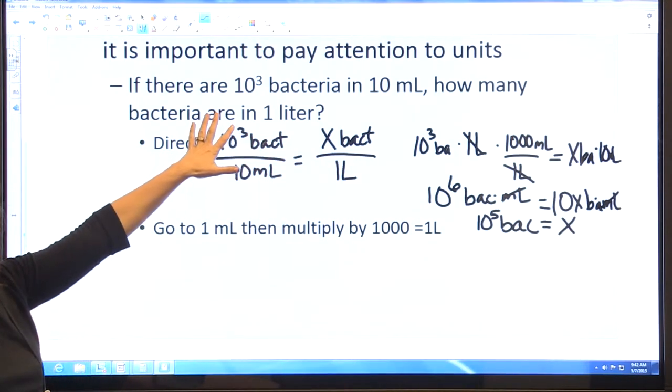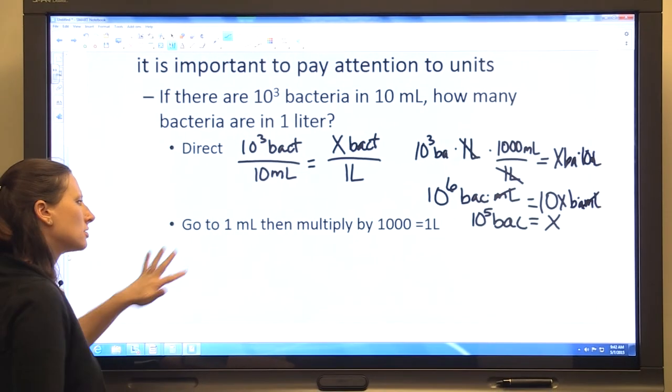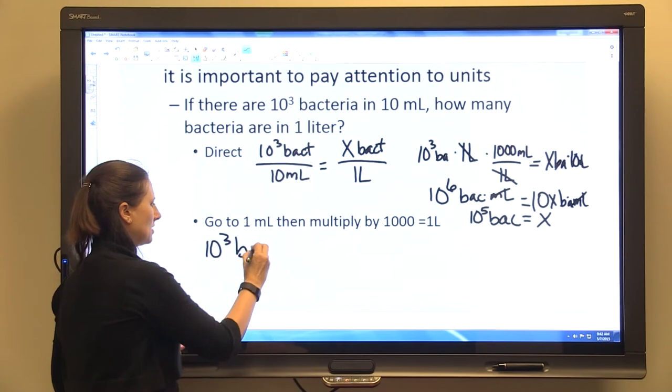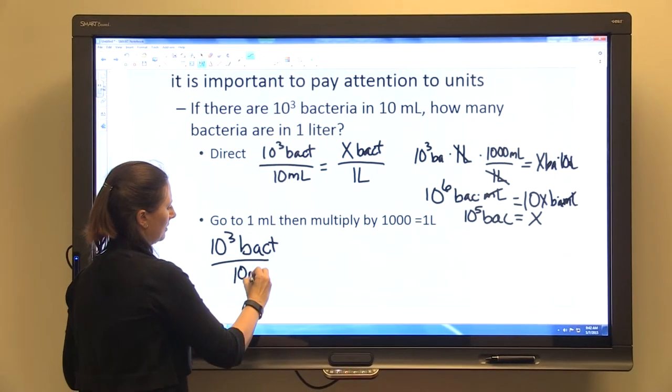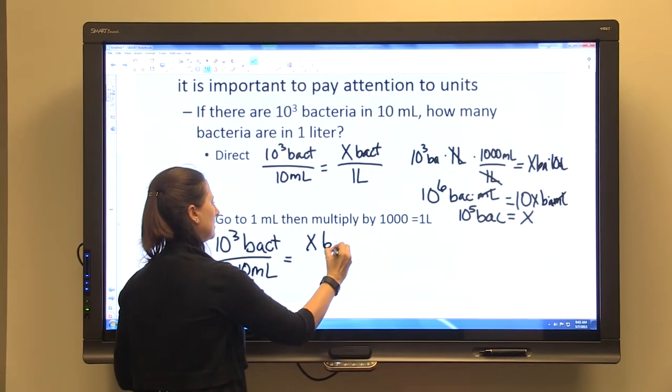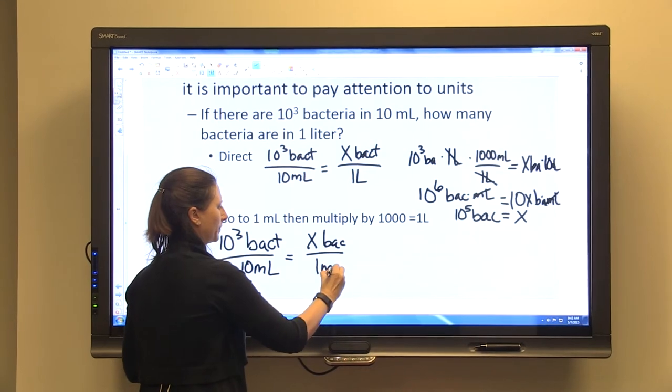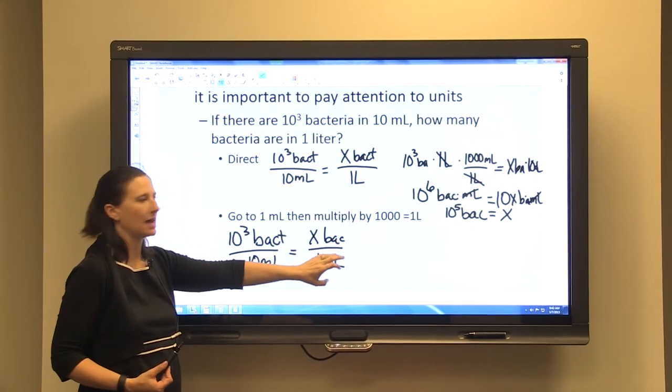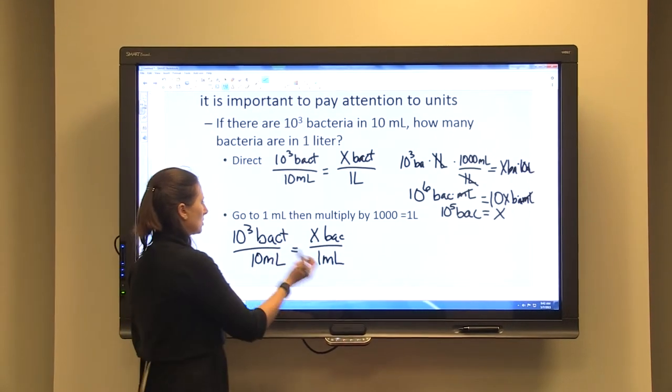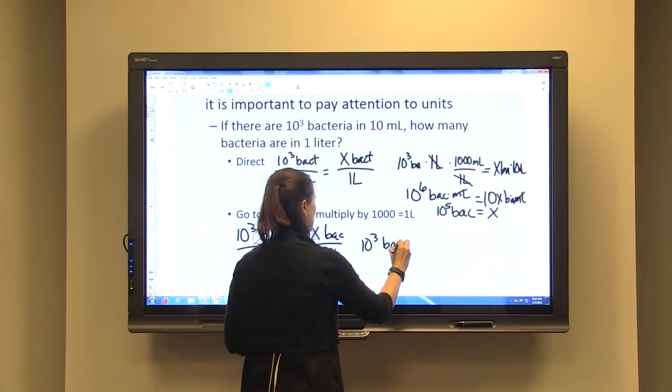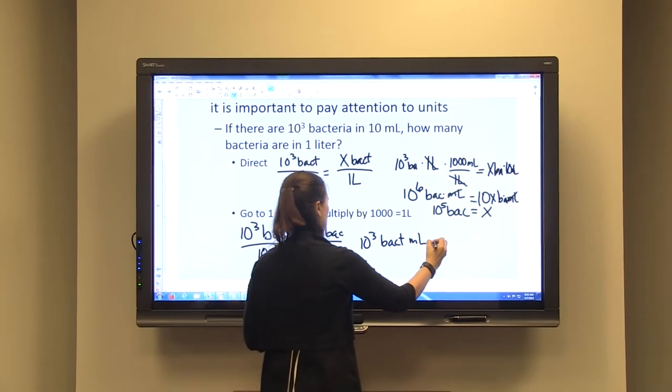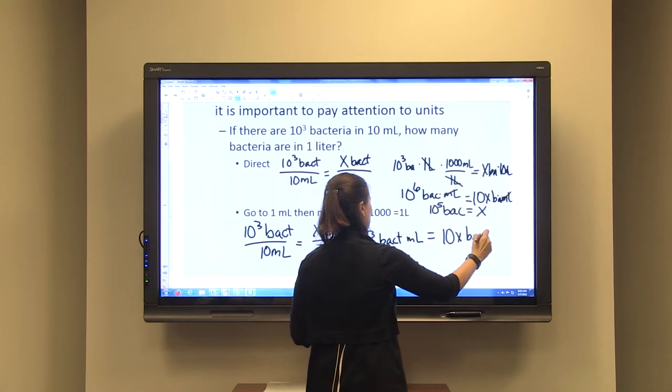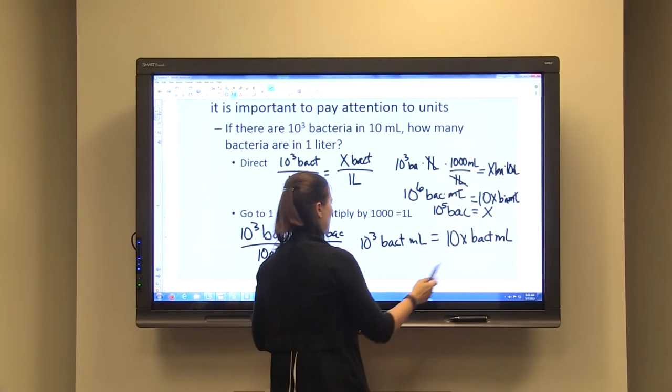That answers our question: how many bacteria are in 1 liter? 10⁵. Here's another way of solving that same proportion. We can set up a proportion of 10³ bacteria in 10 mL gives us how many bacteria in 1 mL, so we're going to determine how many bacteria are in 1 milliliter, and then we'll use that to get us to 1 liter by multiplying by a thousand. Again, 10³ bacteria over 10 mL equals X bacteria over 1 mL.